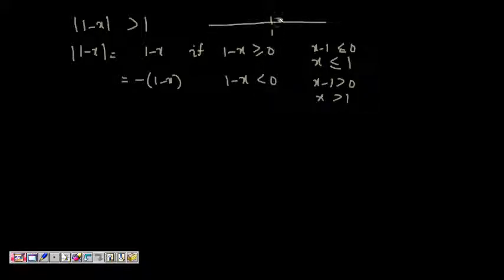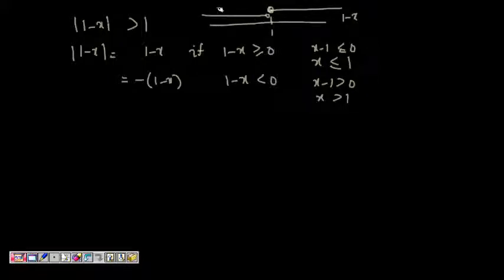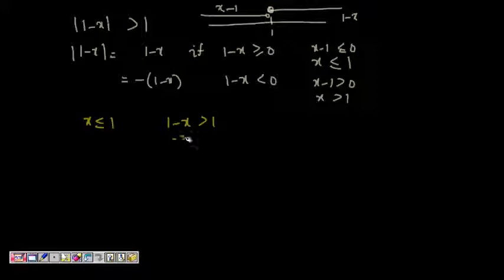So for x less than or equal to 1 it is 1 minus x, and for x greater than 1 it is x minus 1. Now let's solve it. On the part where x is less than or equal to 1, we have 1 minus x is greater than 1, so minus x is greater than 0, so x is less than 0.